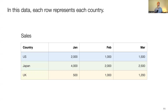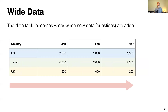The same data can be stored in various ways, and it really depends on who stored it. Especially when you get data from Excel users, this type of problem can happen. Here's a sales dataset where each row is a country and each column is a month — so US in January made $2,000, February $1,000, and so on. This is considered wide data because it tends to become wider as more data comes in — you'd need to add April, May columns, and so on.